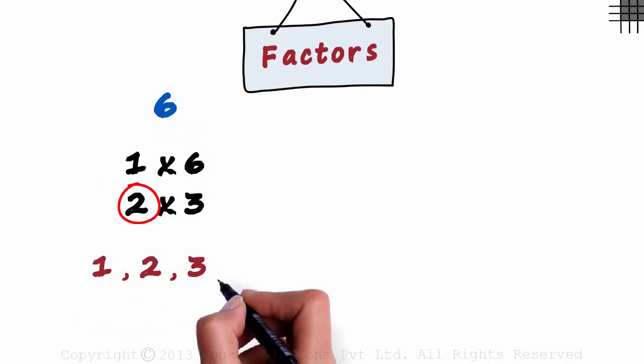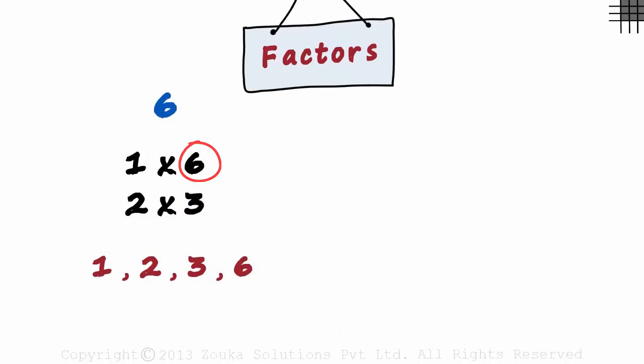So the factors of 6 are these four numbers: 1, 2, 3 and 6. 1 is a factor of 6 since there is some natural number that it can be multiplied with to get the original number.